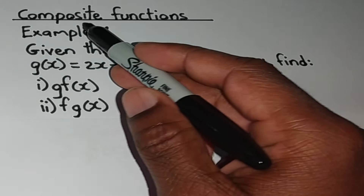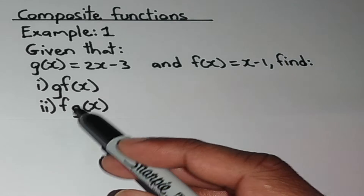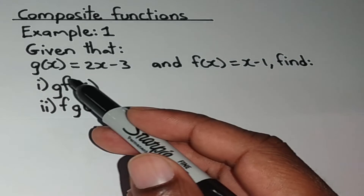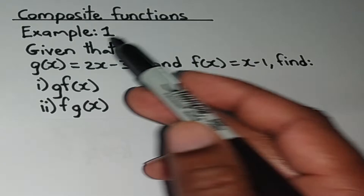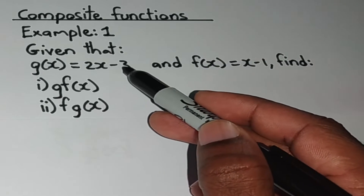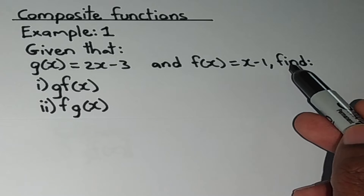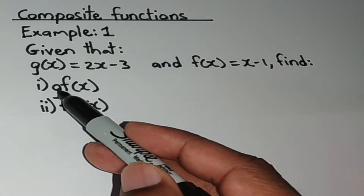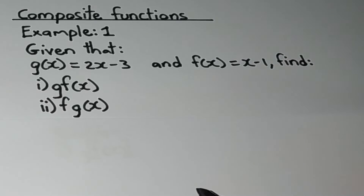I want to look at how to evaluate composite functions, and in this video we will be looking at about two examples of these types of questions. Here we have example one: given that g of x is equal to 2x minus 3 and f of x is equal to x minus 1, find part 1 g of f of x, part 2 f of g of x. Now let's see how we can evaluate these types of questions.